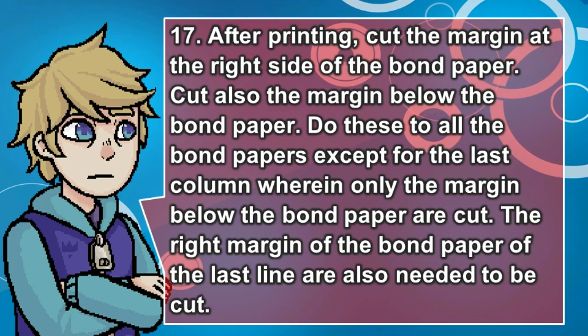After printing, cut the margin at the right side of the bond paper and cut also the margin below the bond paper. Do these to all the bond papers, except for the last column wherein only the margin below the bond paper is cut. The right margin of the bond papers on the last row also needs to be cut.